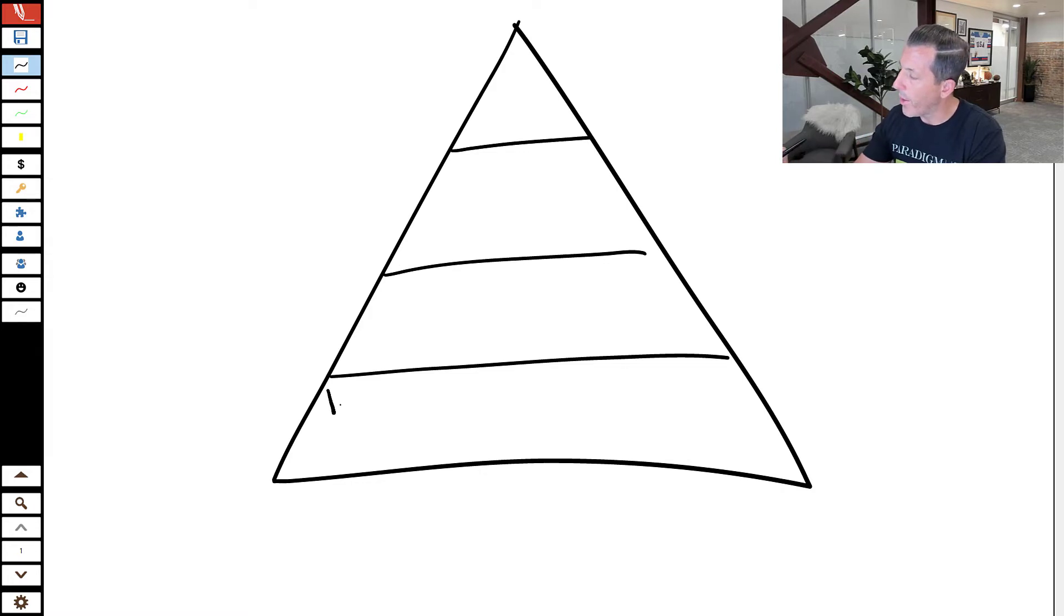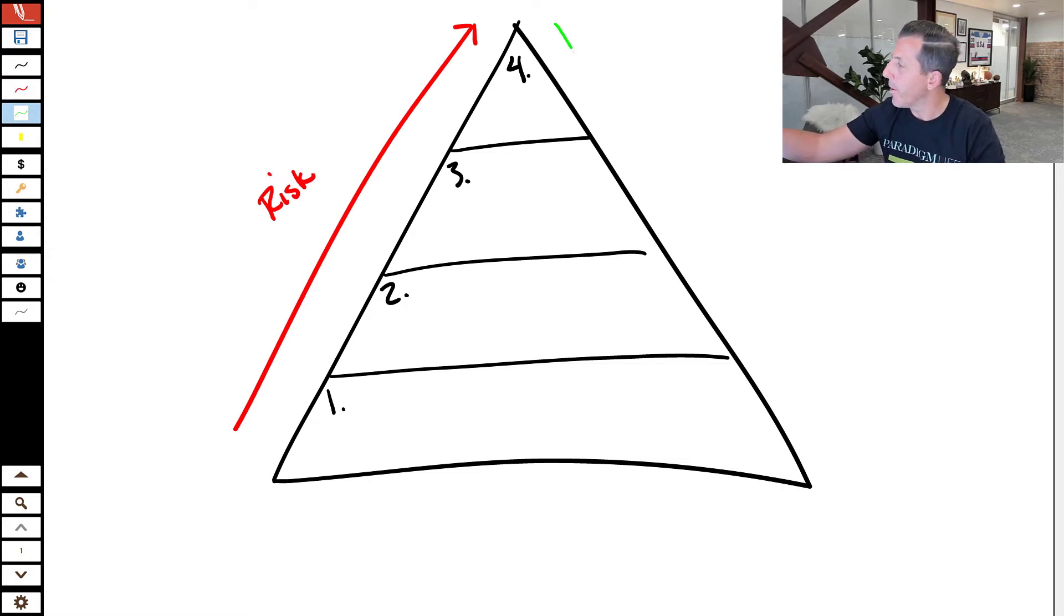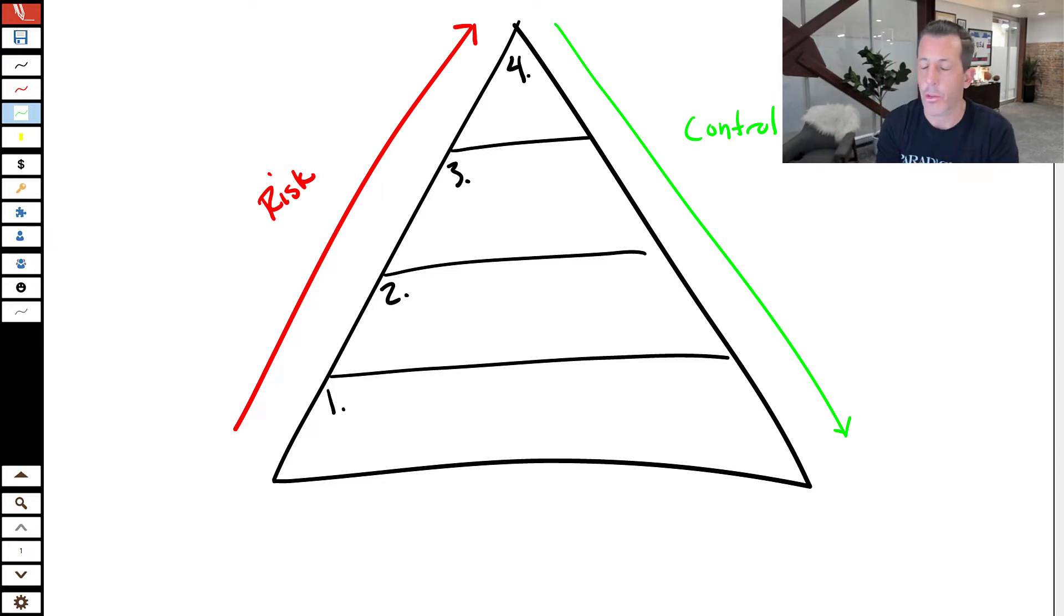Tier one is at the bottom. It's the foundational tier, tier two, tier three and tier four. These tiers are based on a function of risk and control. So the higher you go on the pyramid or in the hierarchy, the more risk you are taking. The lower you go, the more control you have. Control and influence.